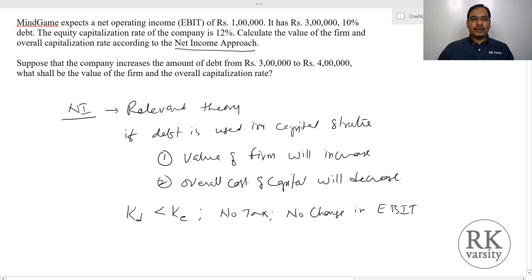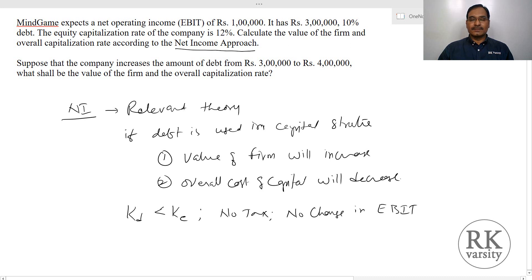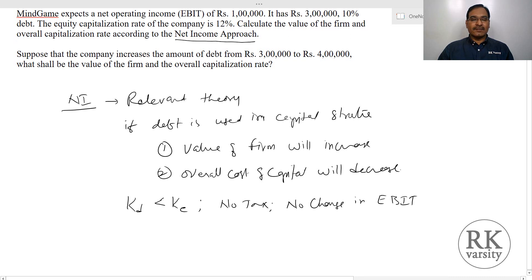Mindgame expects a net operating income — that is, EBIT — of 1 lakh and has 3 lakh debt at 10%. The equity capitalization rate of the firm is 12%. Calculate the value of the firm.